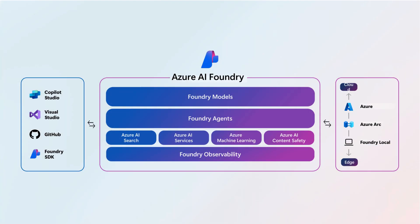Observability is vital for managing AI applications across their lifecycle. From experimentation through production, Azure AI Foundry provides a robust observability suite that helps developers monitor quality, reliability, and security, ensuring AI apps perform consistently and securely. These tools integrate smoothly with your existing workflows and are essential for building trustworthy AI solutions.